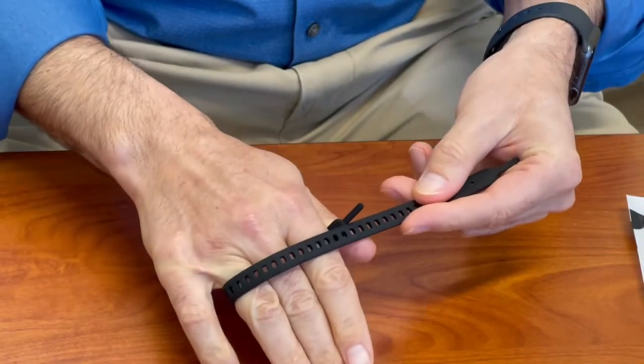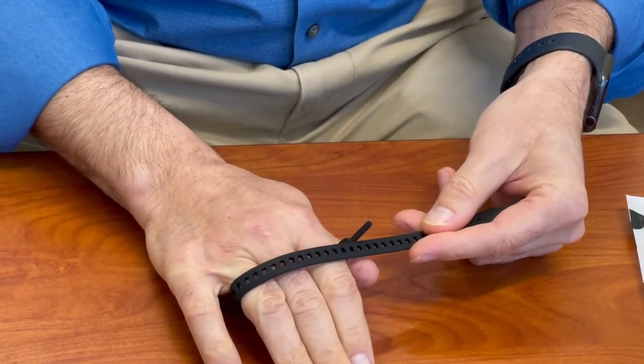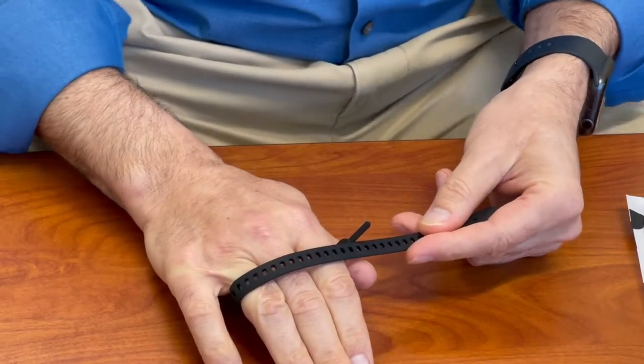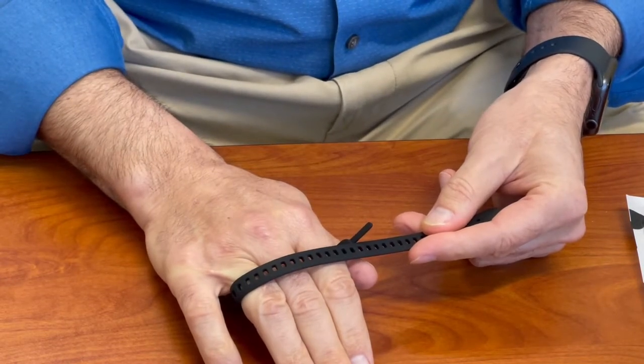First, the splint is wrapped around the fingers. In this case we're going to do a middle finger relative motion orthosis in extension.